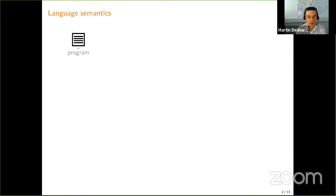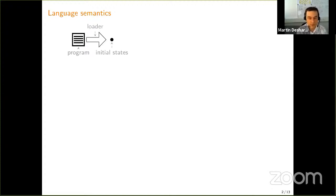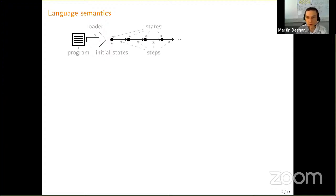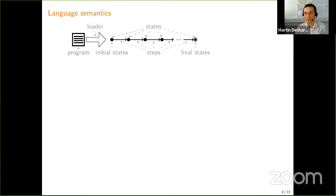We are in the context of formalizing the compilation from one program to another, so we first need to define what the semantics of a program is. We start with the static representation of a program, we have some kind of loading phase that transforms the static representation to a dynamic representation which can be executed. The result of loading is the initial dynamic state of the program, and we have a transition relation which goes from one state to the other until we reach one of possibly multiple final states.